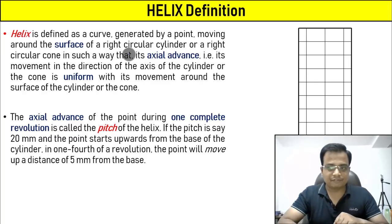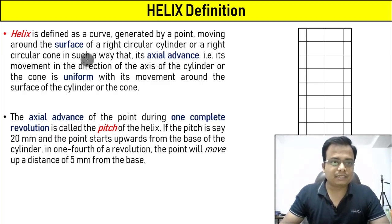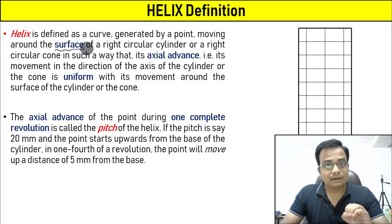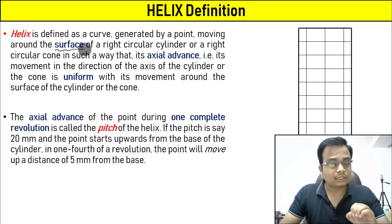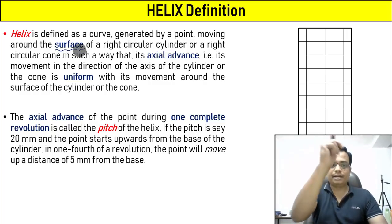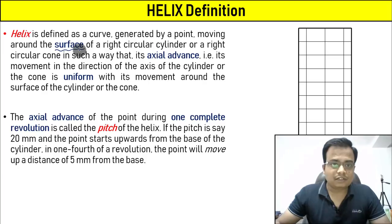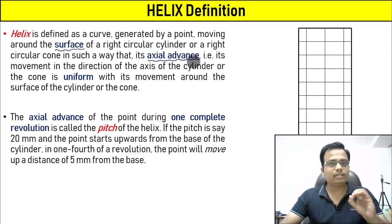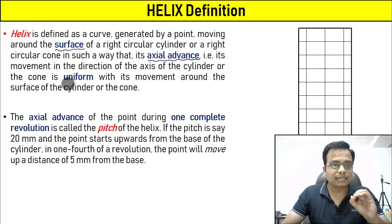Let us try to read the definition. Here we go. It is basically a curve generated by a point moving around the surface of a cylinder. So it's a point which is moving around the surface of a cylinder in such a way that its axial advance — a very important term — is uniform.